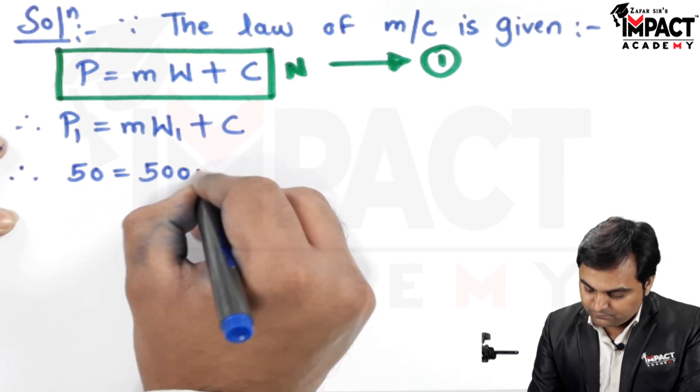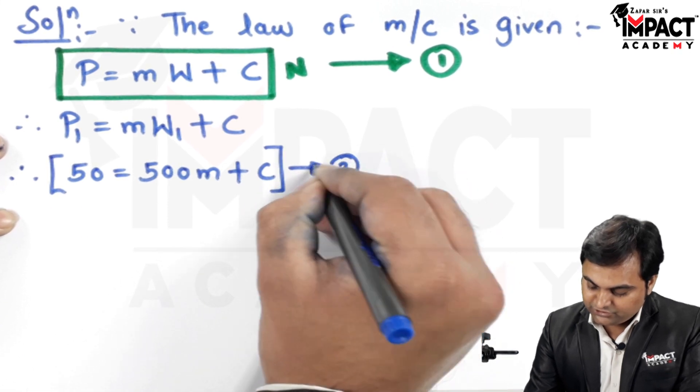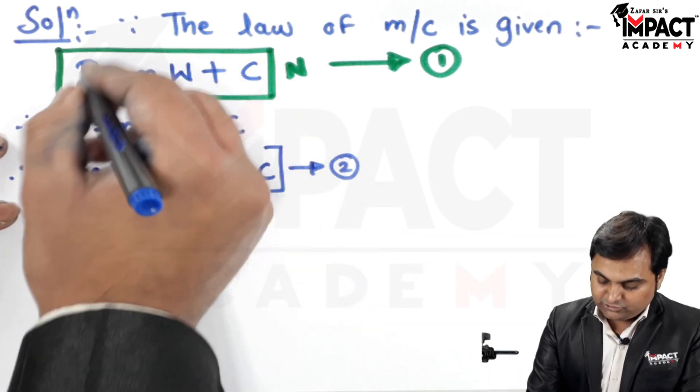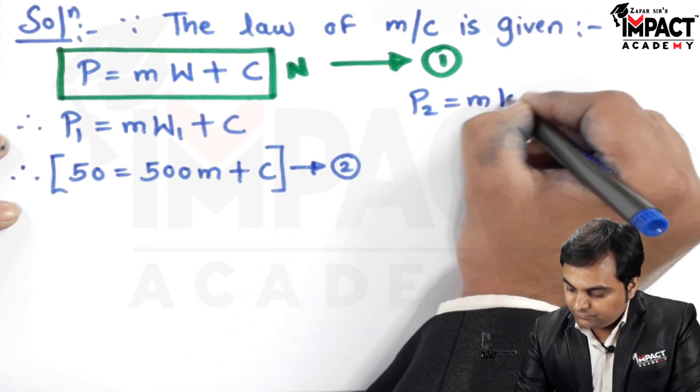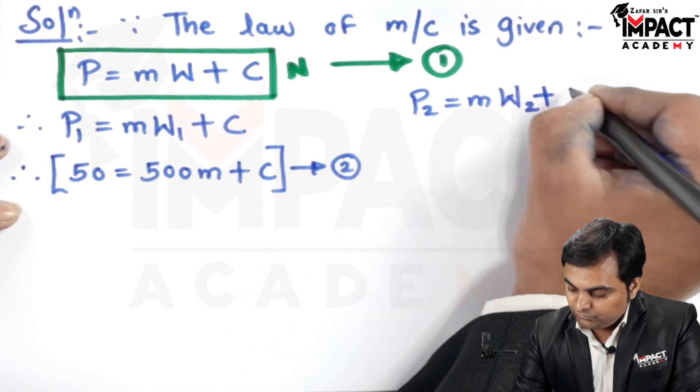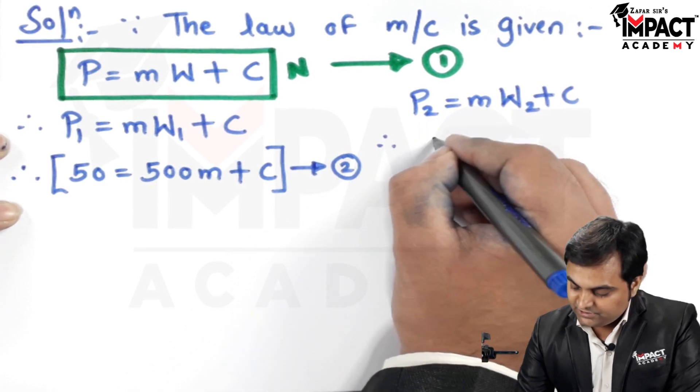Similarly, I use this law of machine for the second condition: P2 equals M times W2 plus C. Therefore P2 is 60 and W2 is 750. That is equation 3.